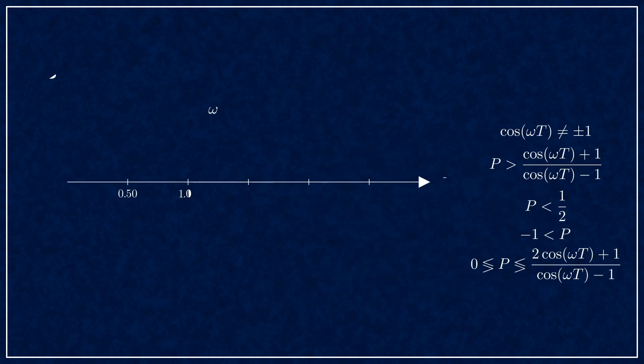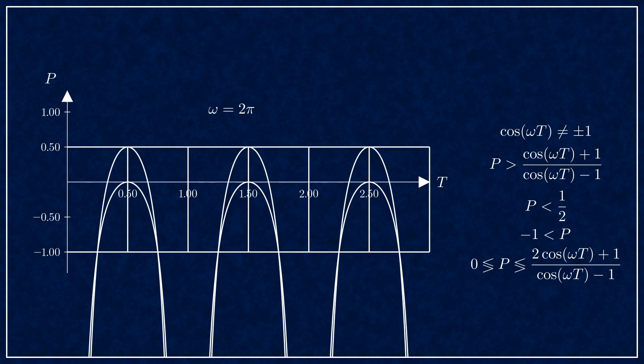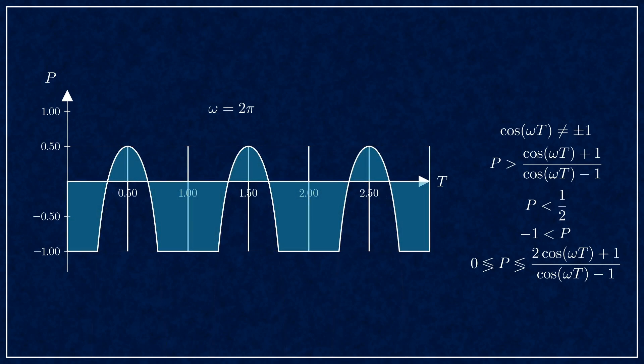Let's put these conditions on a graph. I'm gonna use 2pi for the value of omega. First, the cosine can't be exactly plus minus 1, so these sampling times are not possible. Next, p must be larger than this rational function. p must be between half and minus 1. And finally, p must be between 0 and this rational function. Combining these conditions gives us the area of stability.